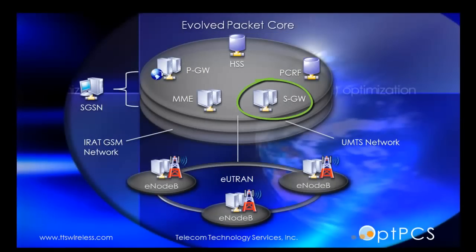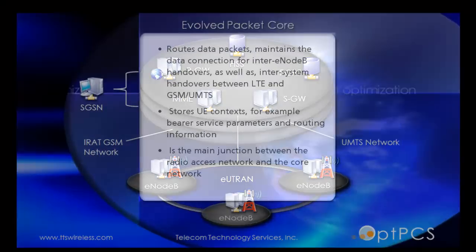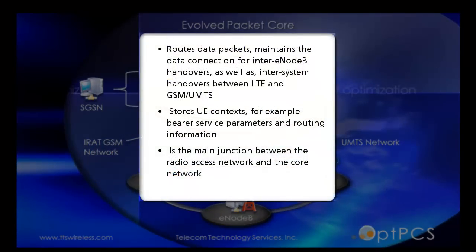Serving Gateway (SGW) – This routes data packets and maintains the data connection for inter-eNodeB handovers, as well as inter-system handovers between LTE and GSM-UMTS networks. It stores UE context, for example bearer service parameters and routing information, and is the main junction between the radio access network and the core network.